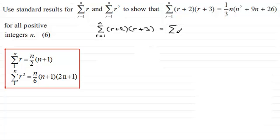Now we've got sigma r going from 1 to n then. And expanding the brackets gives us r squared. And then we've got 3r plus 2r, so that's 5r. And then 2 times 3, that's plus 6. Don't forget to put that all in brackets because you're summing over all of this.